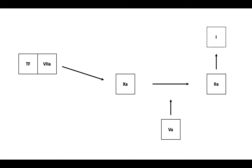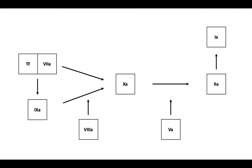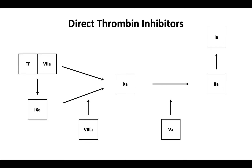Thrombin converts fibrinogen to fibrin. Let's bring in part of the intrinsic pathway with factor 9, which works with its cofactor 8a to further activate factor 10 to 10a. Now, let's discuss the mechanism of action of the direct thrombin inhibitors. As their name implies, they act against thrombin, thus cutting off thrombin generation and fibrin formation. Examples include the oral agent dabigatran and the parenteral agents argatriban and bivalirudin.